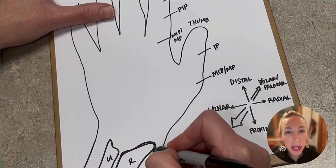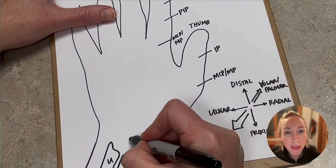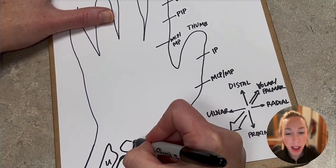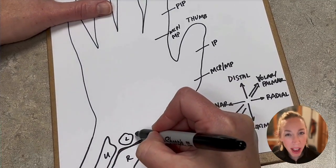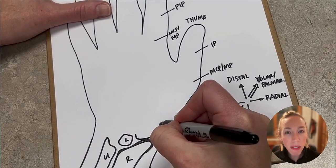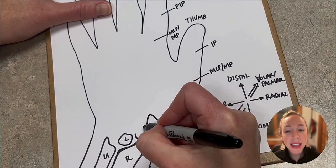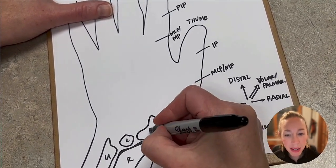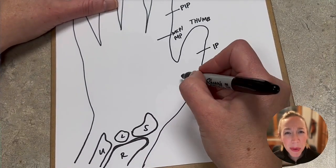It was really helpful for me when I learned that the radius has a lunate fossa and scaphoid fossa. You can say scaphoid or scaphoid, doesn't matter. But then I learned, okay, lunate sits in the lunate fossa and scaphoid sits in the scaphoid fossa. That makes sense. Forget about that acronym from school, right?